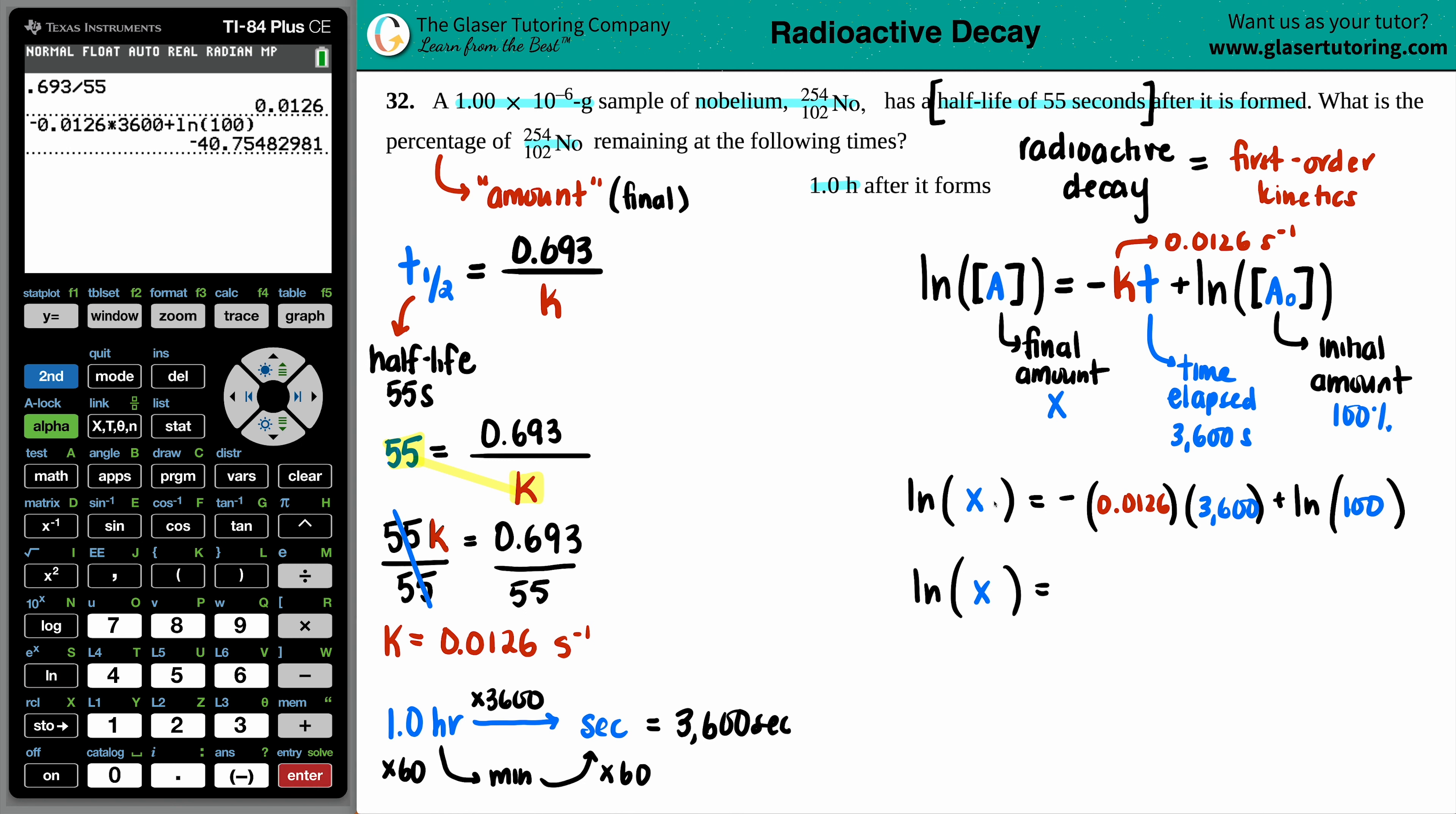And there we go. I did include the negative here, so negative 0.0126 times 3600 plus the ln of 100. This is going to be negative 40.755.